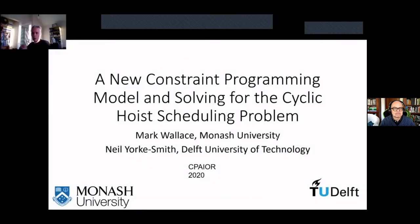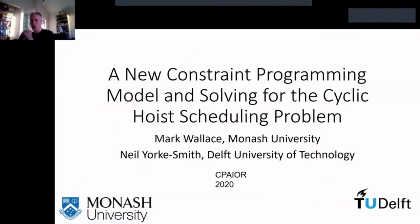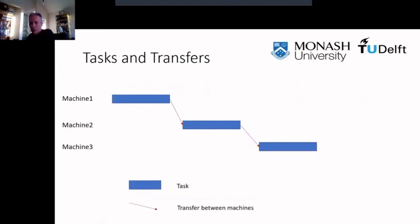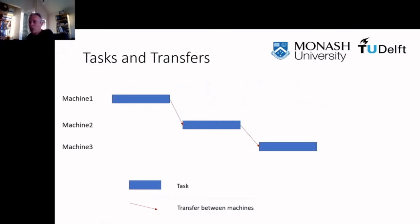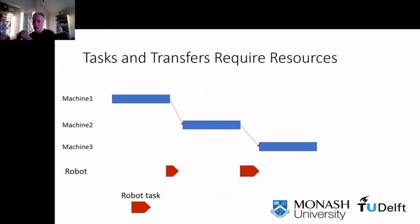Now we're going to move to the second talk: a new constraint programming model and solving for the cyclic hoist scheduling problem. This talk introduces a new approach for solving the cyclic hoist scheduling problem. My name is Mark Wallace, and this work was carried out in partnership with Neil York Smith. A scheduling problem allocates a start time and a machine to each task. In this problem, we're also concerned with the transfer of jobs between machines, carried out by another resource such as a robot, which leads to an additional robot scheduling problem.